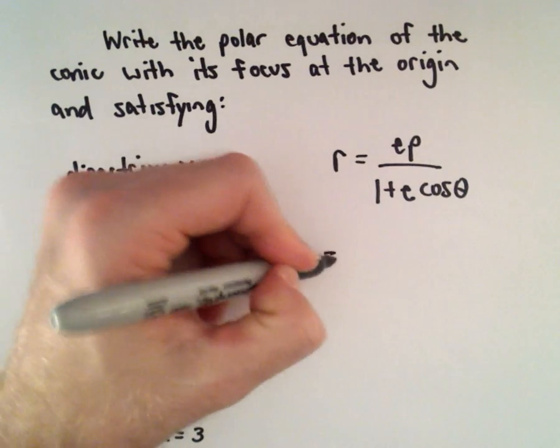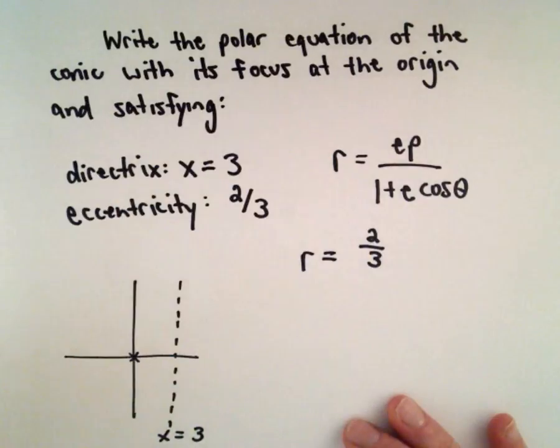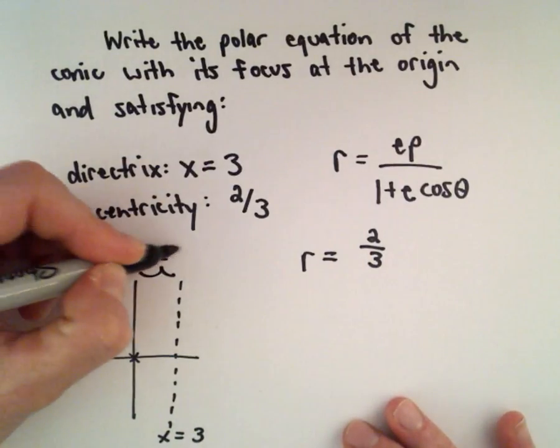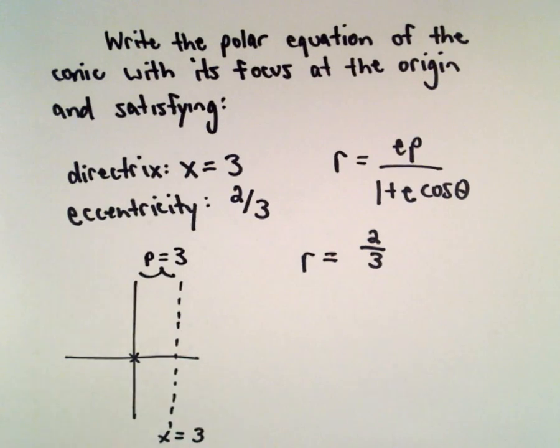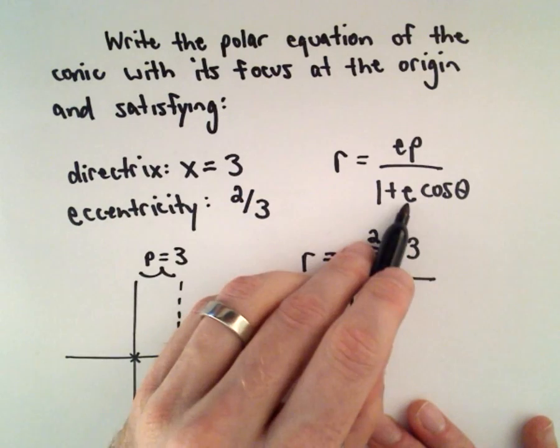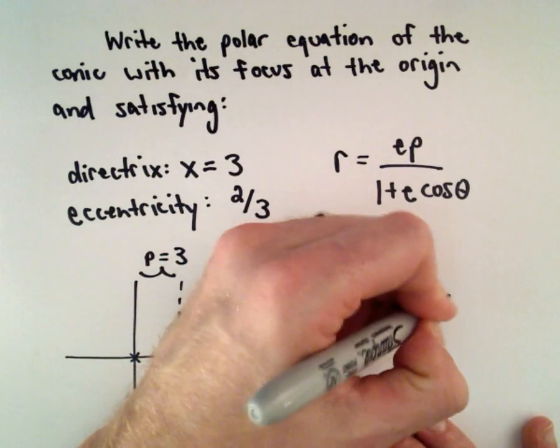Now it's just a matter of filling in the values. The eccentricity is 2/3. Since it's p units to the right, our p value equals 3. So we'll have 2/3 times 3 over 1 plus, again the e value will be 2/3 times cosine theta.